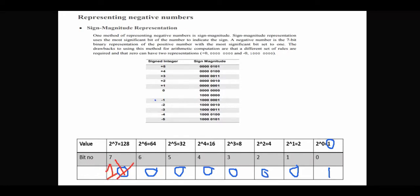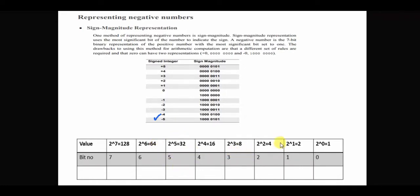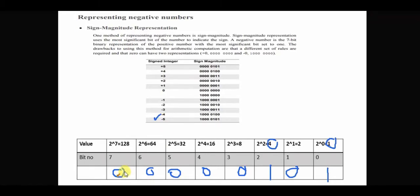If the value is 2, or if we have 7 then we give 1, and if we have 4 then we give 1 to 7. Suppose we want to represent minus 5 using sign magnitude. For minus 5, the magnitude is 5, which is divided as 4 and 1. Then the count is 0, and the 7th bit is 1.